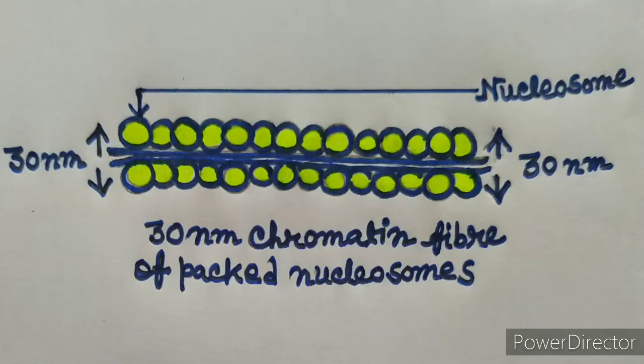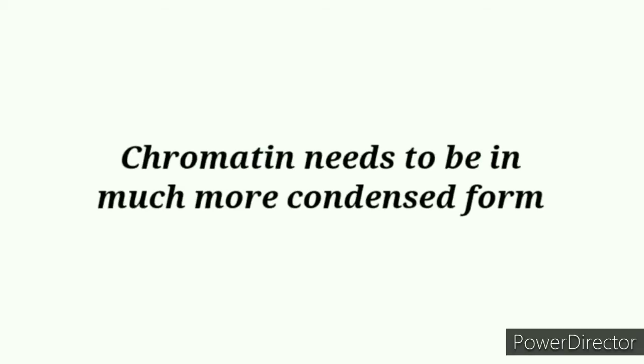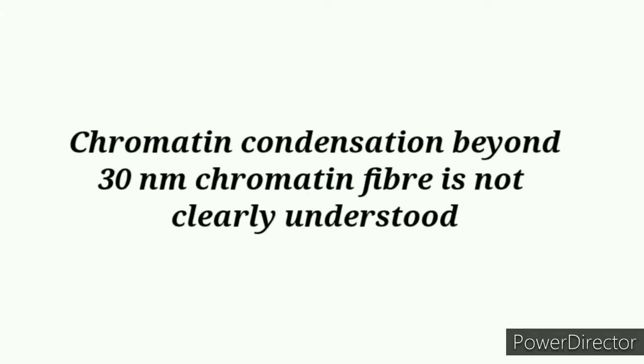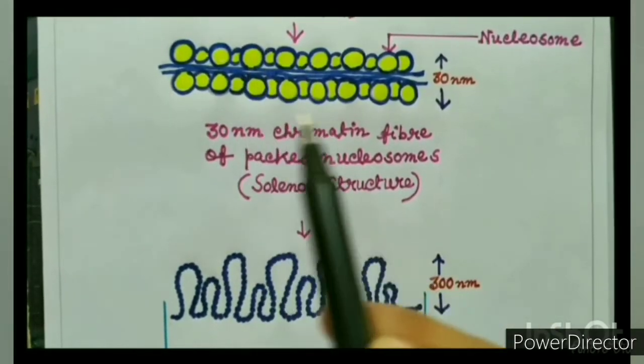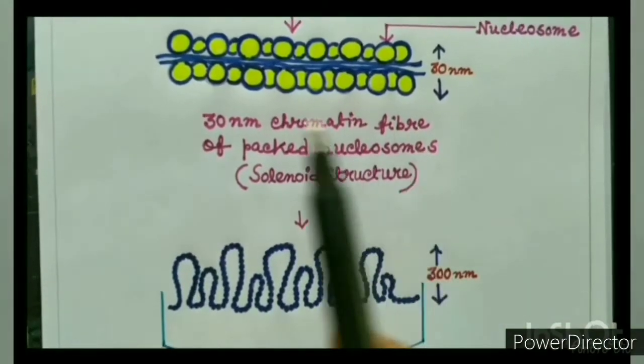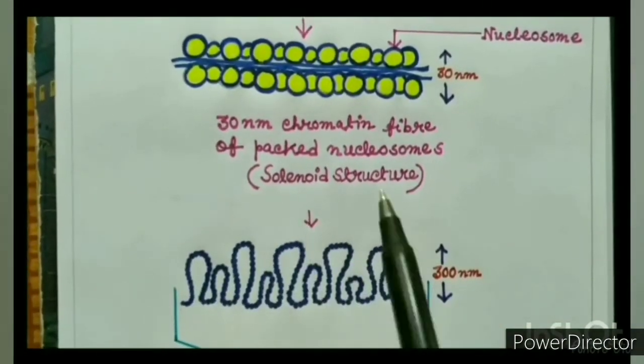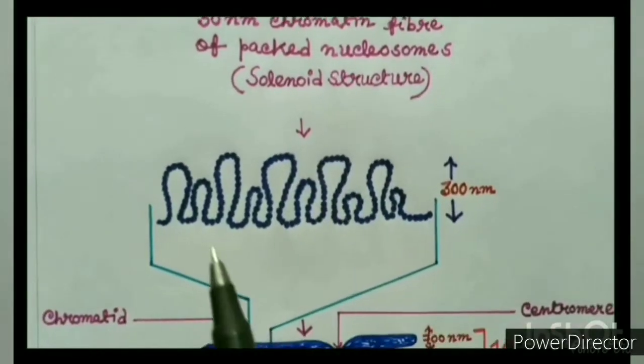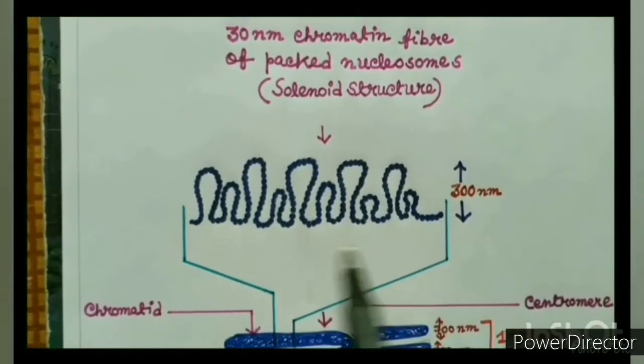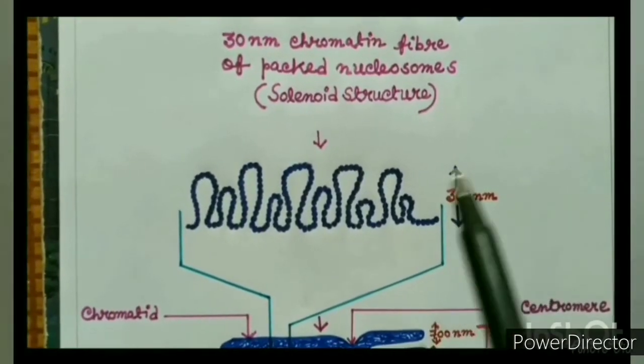The solenoid structure of chromatin is still not sufficient to fit appropriately inside the microscopic cell nucleus. Chromatin needs to be in a much more condensed form. Chromatin condensation beyond the 30 nanometer chromatin fiber is not clearly understood. It is commonly believed that further condensation of this solenoid structure leads to the formation of a much more condensed chromatin fiber that is 300 nanometers in diameter.